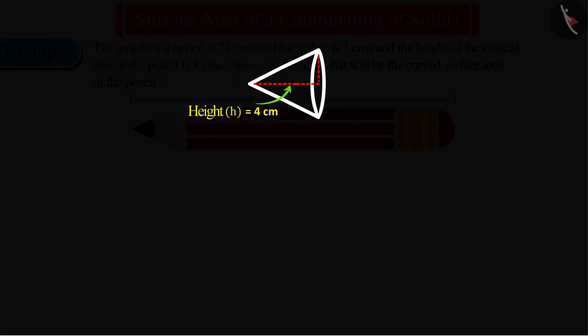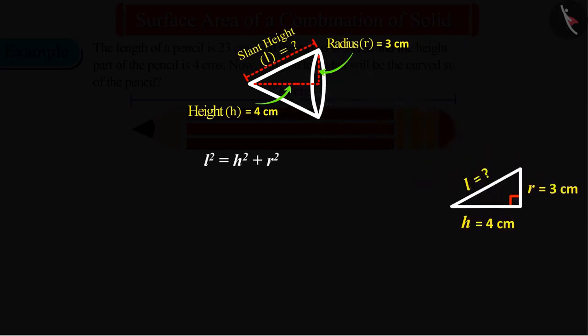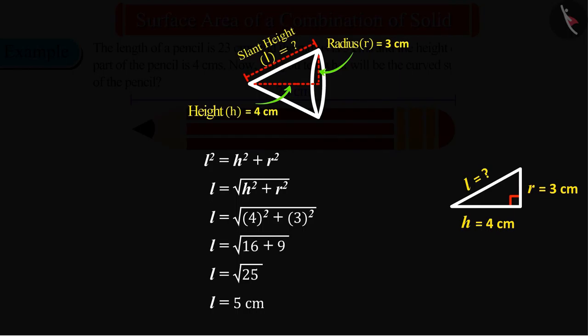We know the height and radius of the cone, but for the surface area we need to find the measurement of the slant height L of the cone. Can you tell what will be the slant height? We can find the slant height of the cone with this formula, which we get as 5 centimeters.